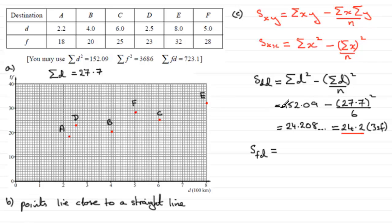The X corresponds to the F and the Y corresponds to the D. So we're going to have Sigma of FD minus Sigma F multiplied by Sigma D, and that's all divided by N.